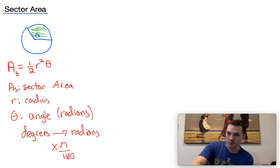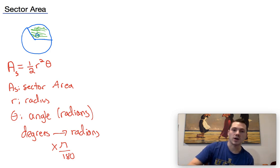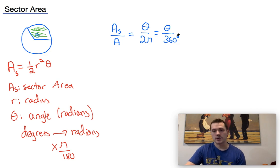On the other hand, you can use a formula that's very similar to what we use, that ratio that we set up for arc length. And that is, the sector area over the total area of the circle is equal to the central angle divided by 2 pi, if it's in radians, or the central angle divided by 360, if it's in degrees.